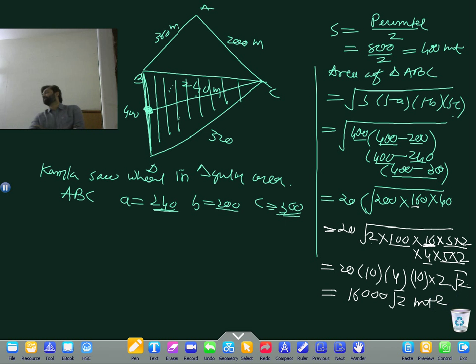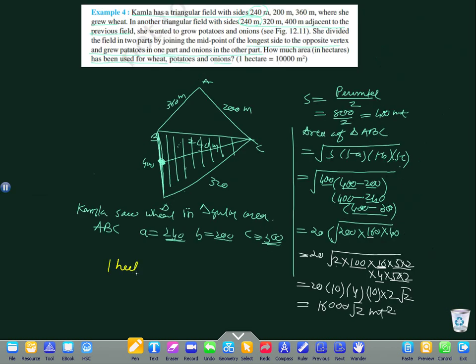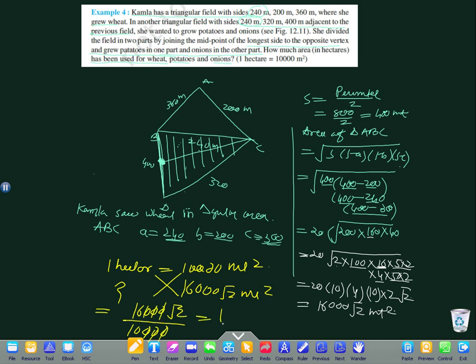So your area for sowing wheat will be 16,000 root 2 meter square. We will answer in hectares. 1 hectare equals 10,000 meter square. So that equals 16,000 root 2 divided by 10,000, which is 1.6 root 2 hectares.